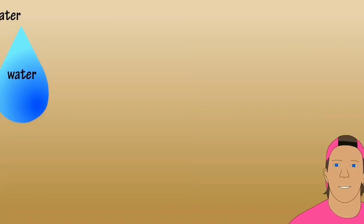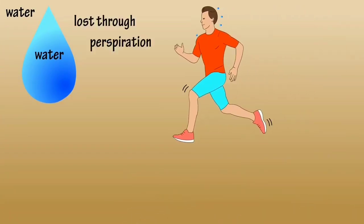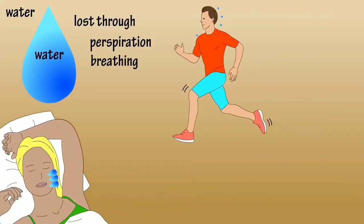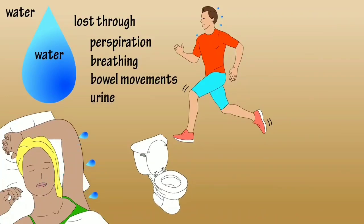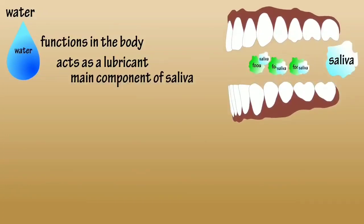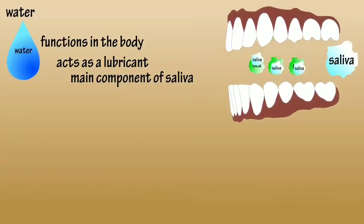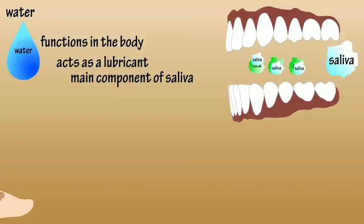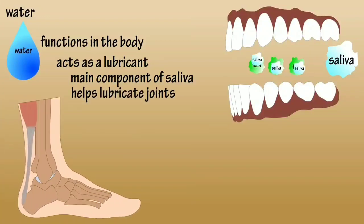Water is an essential nutrient for the body. As the body loses water through perspiration, breathing, bowel movements, and urine, water must be consumed regularly to maintain a sufficient level. Water has many vital functions, including serving as a lubricant. Water is a main component of saliva, which helps moisten food making it easier to swallow, and it also helps lubricate joints, reducing friction and inflammation.